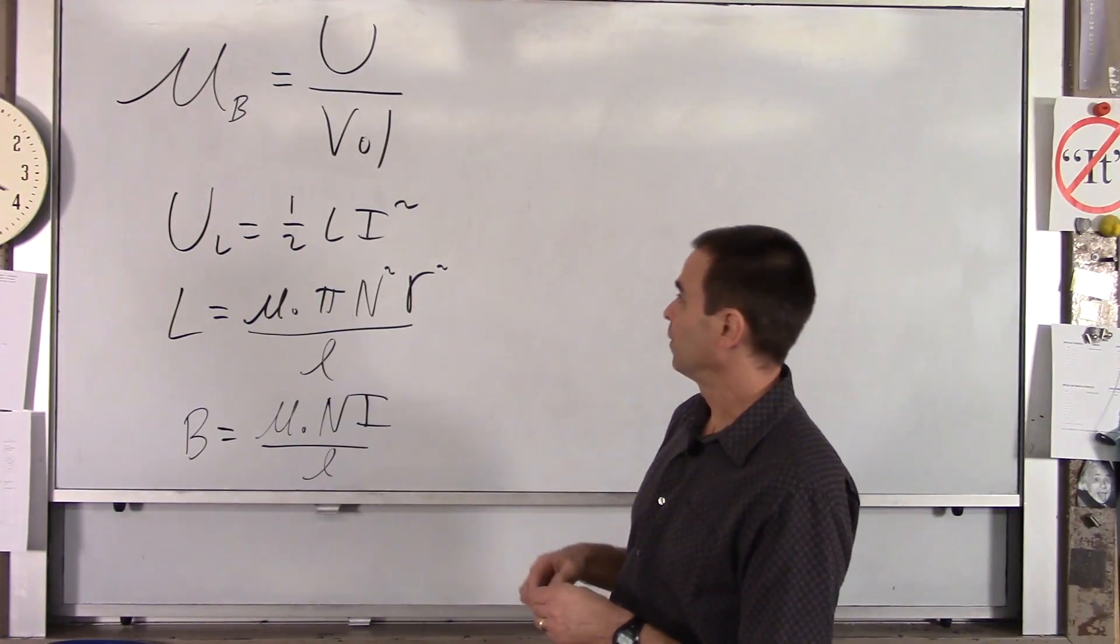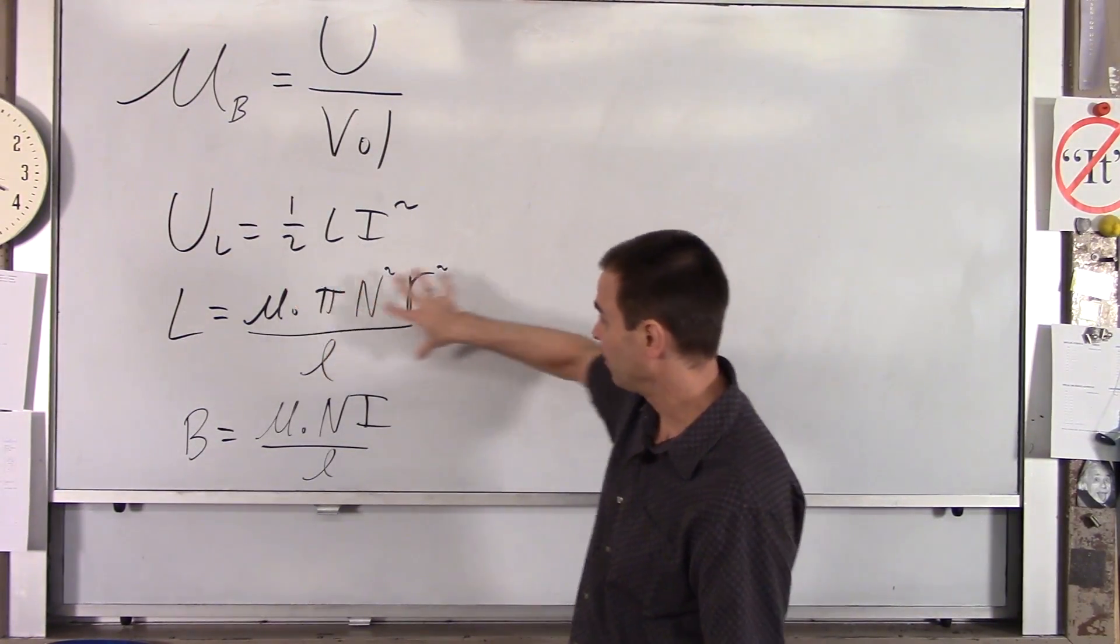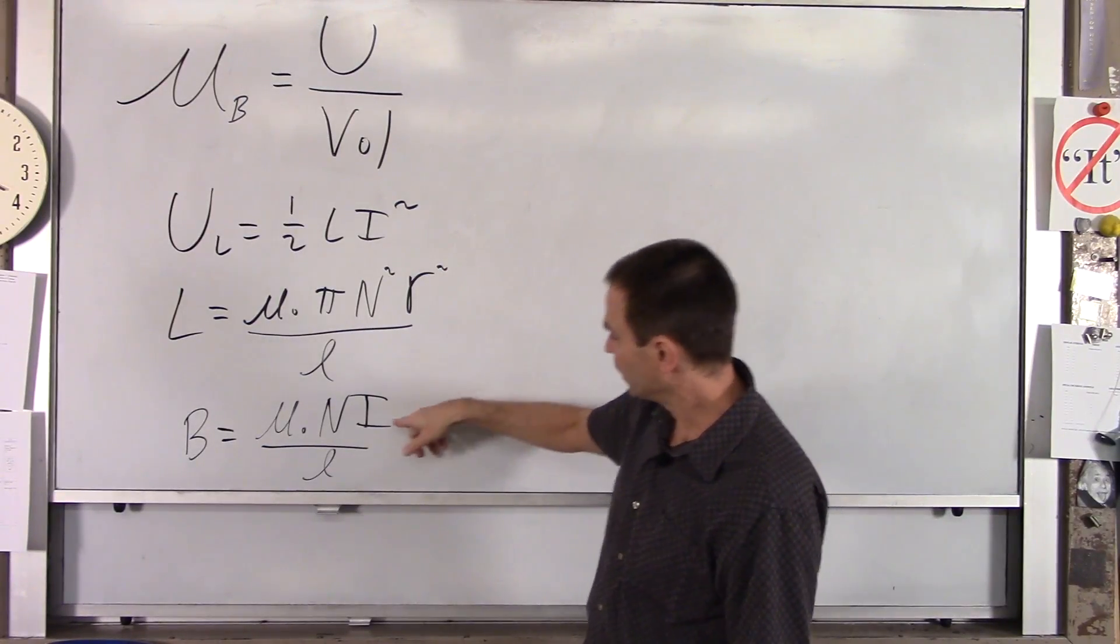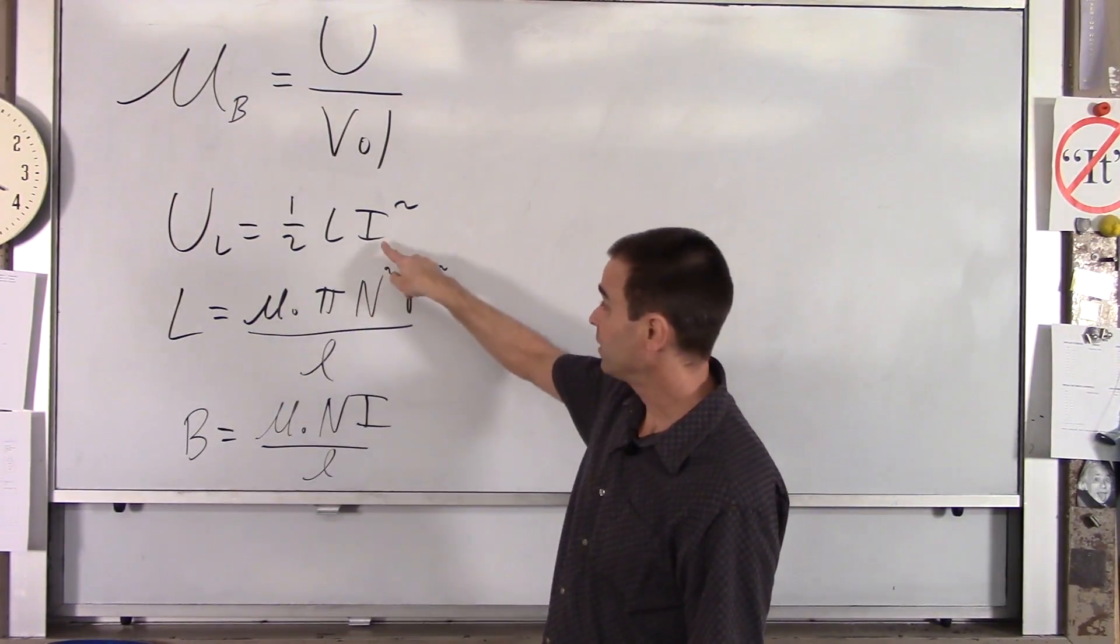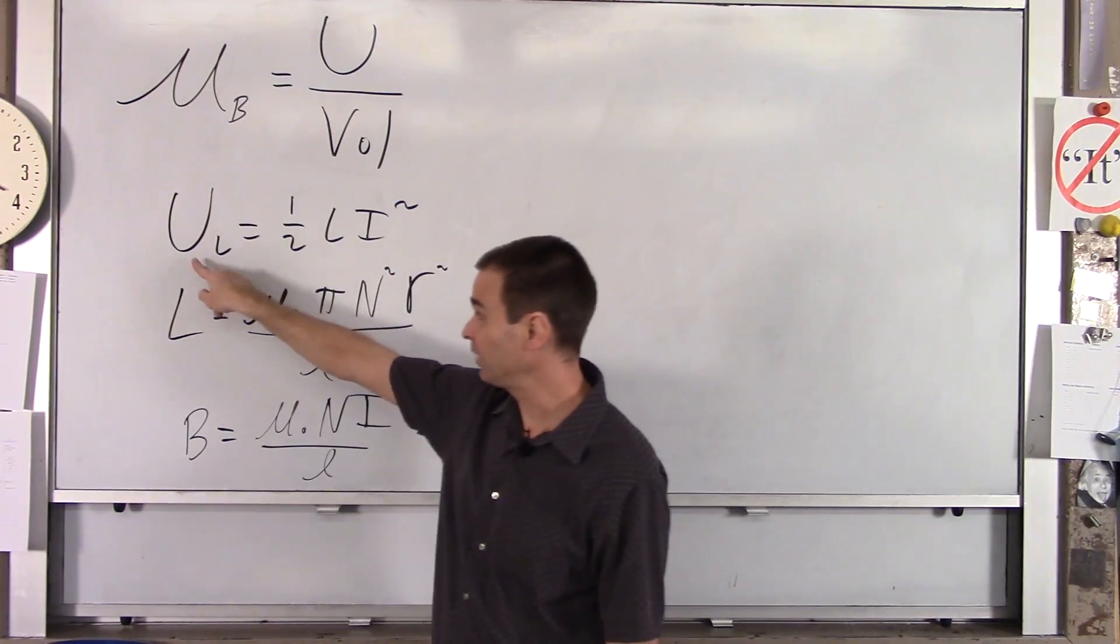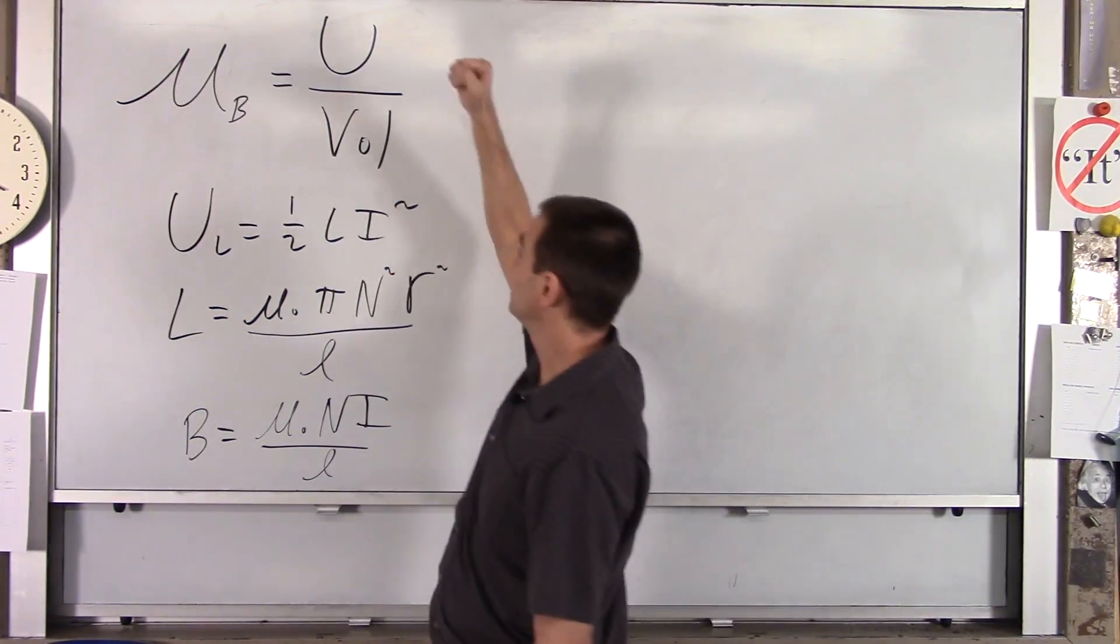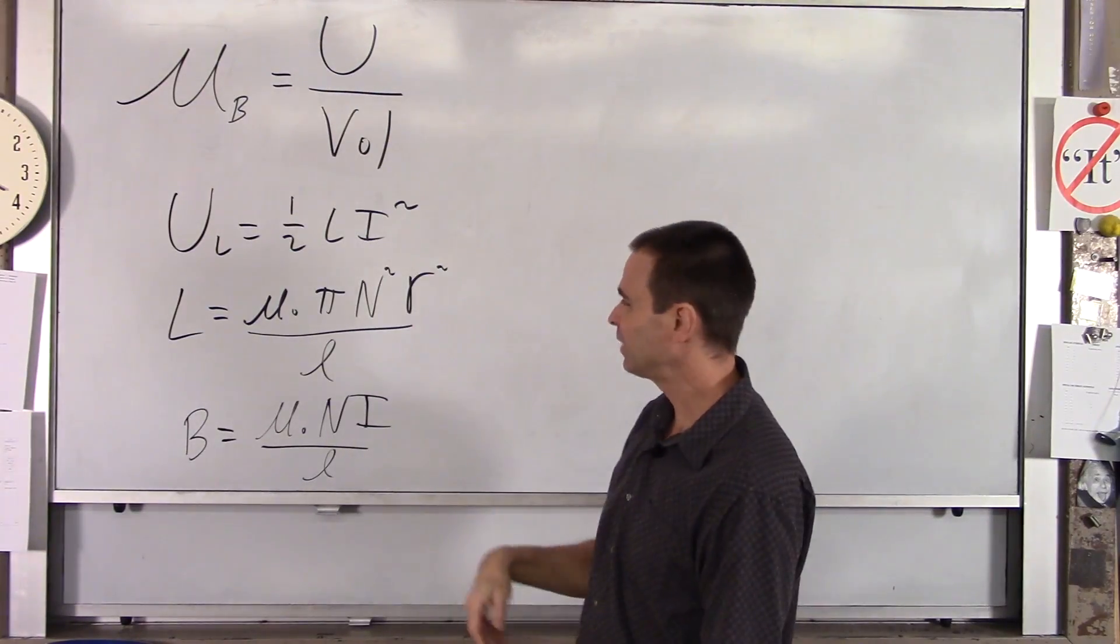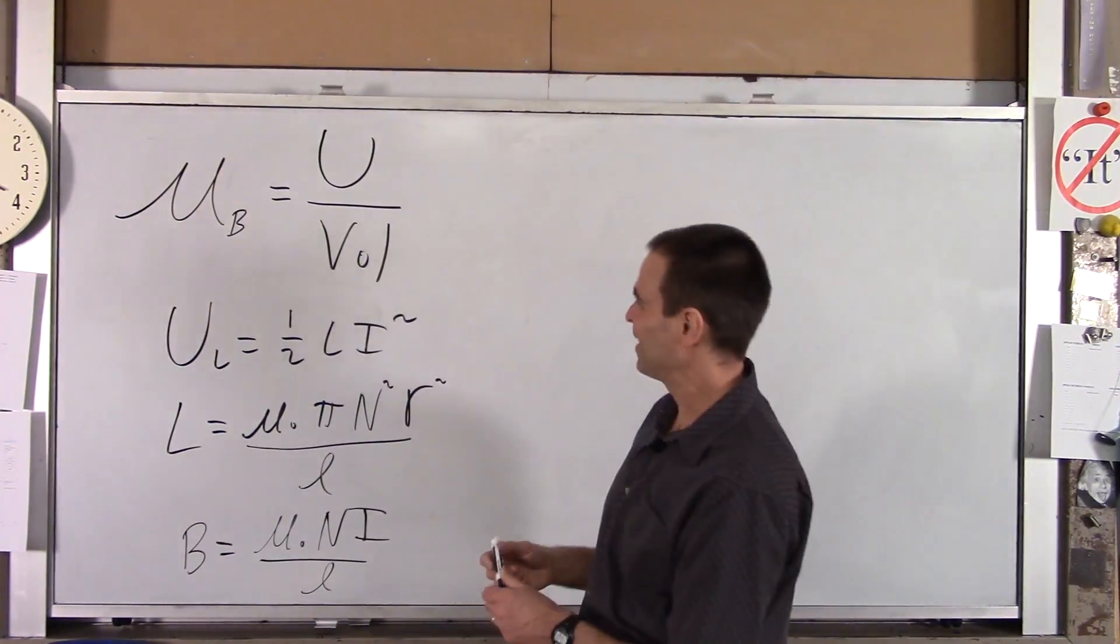So here's what we're going to do. In this equation, we're going to sub in for L. We're going to sub all this stuff in. We're going to solve this for I. We're going to get I in terms of B and put that here. So that'll give us potential energy in terms of B. And then we're going to sub all that into here. And I'm going to do that all in one step. So now we're just doing a little bit of algebra.